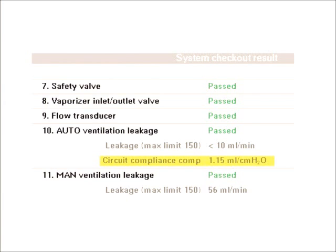Now, from this picture, this is an example of a system checkout. And if we look down here during the leak test, it also checked for my circuit compliance. So the circuit was occluded and it figured out my circuit compliance there. And as you notice, it's highlighted my circuit compliance is 1.15 milliliters per centimeter of water. And this is a very stiff circuit that is being used here. A normal circuit compliance is anywhere from 2 to 3 milliliters per centimeter of water.